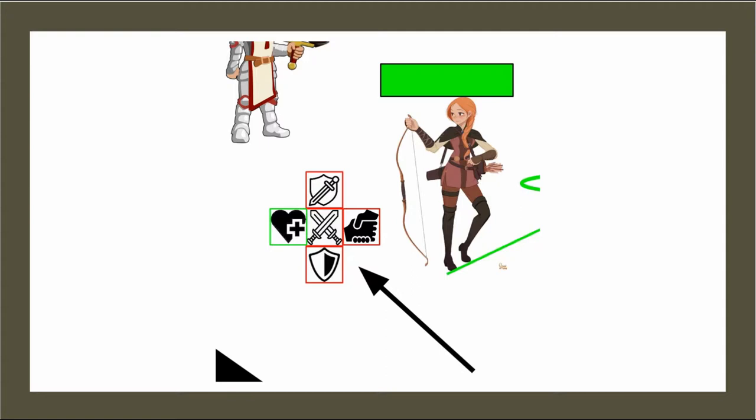In each turn, the player can choose to attack an enemy, use a healing item on an allied character, help a character, parry the next attack, or defend the next attack.